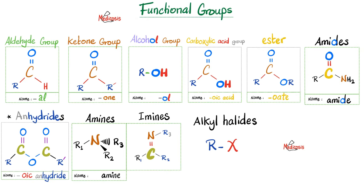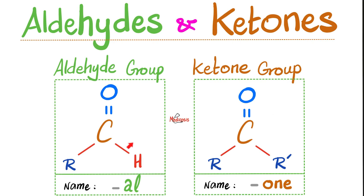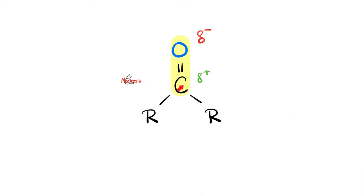Here are the famous functional groups again — these are the most important for your exam. An important distinction: carbonyl versus carbinol. Carbinol is an alcohol group — R–OH. Carbonyl is carbon double-bonded to oxygen, not carbon single-bonded to OH. Aldehydes look like COH (CHO), and end in '-al.' Ketones look like C=O with a chain on each side, and end in '-one.' Since I have an alkyl chain on both sides, that's a ketone.